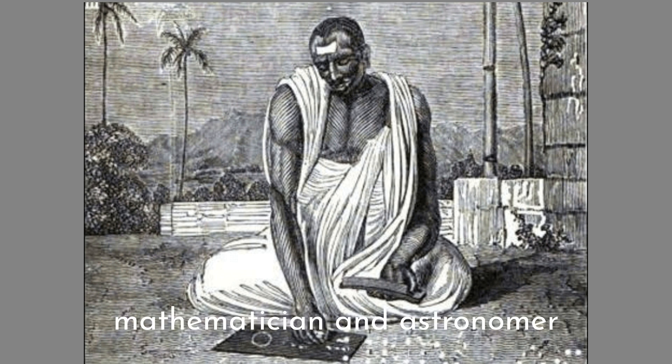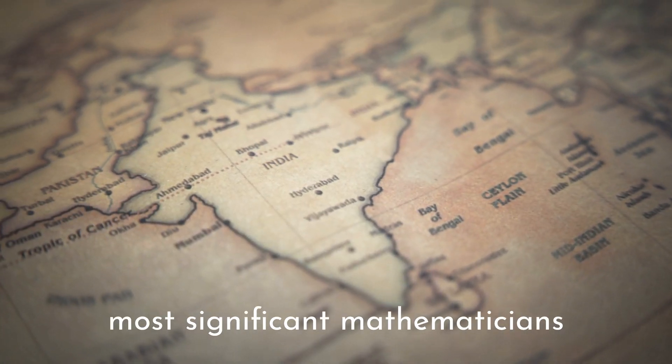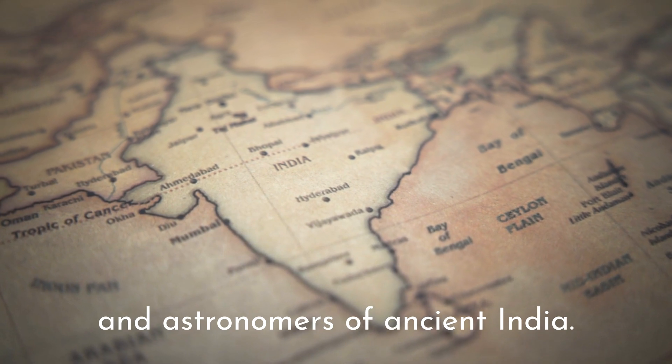Brahmagupta was an ancient Indian mathematician and astronomer who lived during the 7th century CE. He is considered one of the most significant mathematicians and astronomers of ancient India.